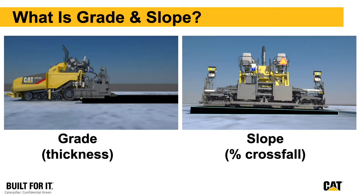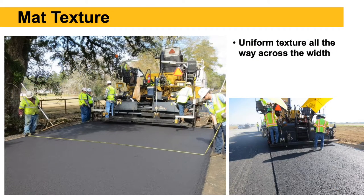What is grade and slope? When we talk about grade in this presentation, we're really talking about thickness of the pavement. When we talk about slope, we're talking about percent crossfall or percent slope in the roadway. As for matte texture, the goal of paving operations is to have a uniform matte texture from one edge of the pavement all the way to the other.